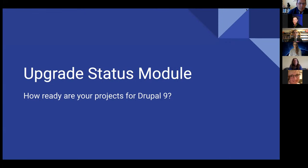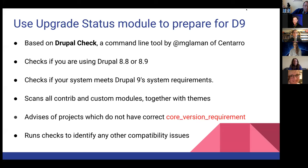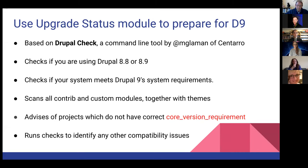The talk is mainly about the upgrade status module — my experience of using it, what it is, what it does, and how it can be useful in getting you ready for the upgrade. It exists to help you prepare your projects for Drupal 9. It's based on a command line tool called Drupal Check, authored by Matt Glamour of Sintaro, previously also known as Commerce Guides, and it runs through a few different things to determine how ready your project is.